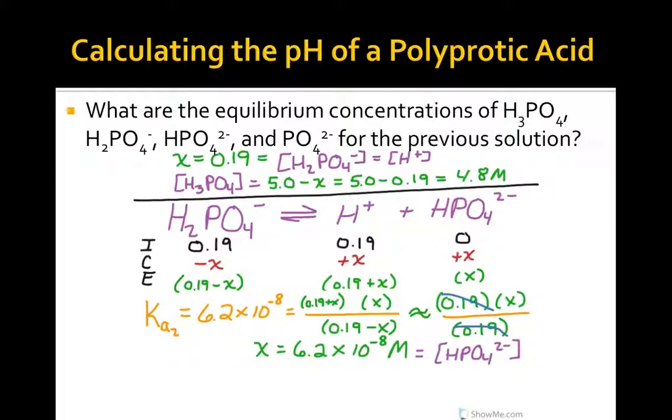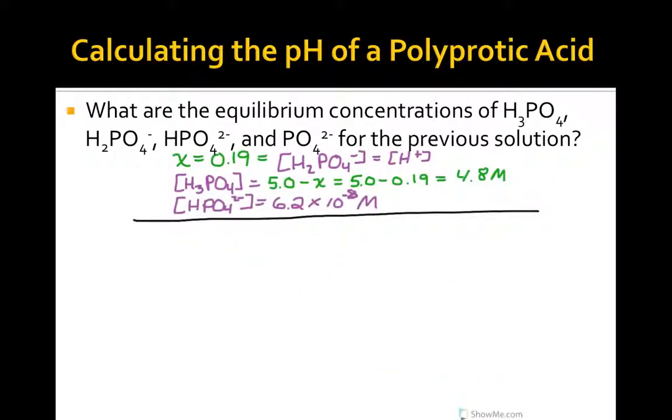Of course, hydrogen phosphate can then dissociate further, so what about the dissociation of hydrogen phosphate? We simply repeat the process for this third dissociation reaction, and we can set up an equilibrium expression for Ka3.